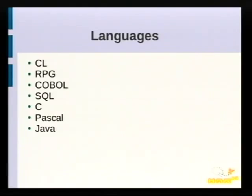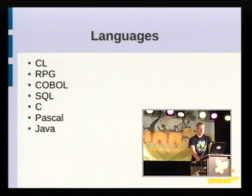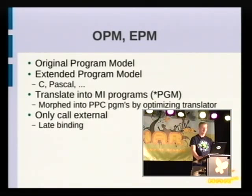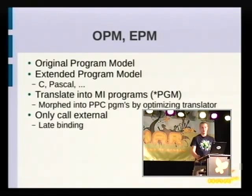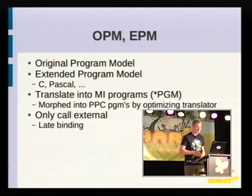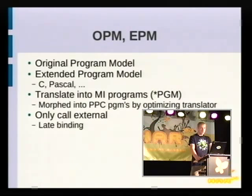There are several programming languages available on the system — some very old, some newer. The original programming model was called OPM, supporting RPG, COBOL, and CL. Later languages were added. When you compile a program it is translated into a program object, which is then morphed into a PowerPC program by the optimizing translator inside the LIC.